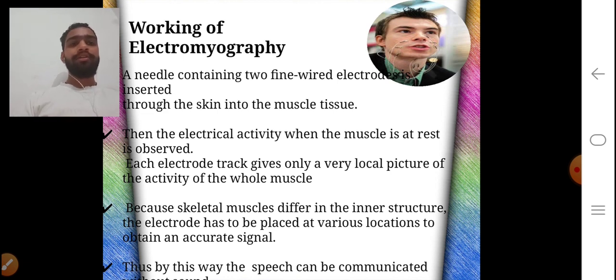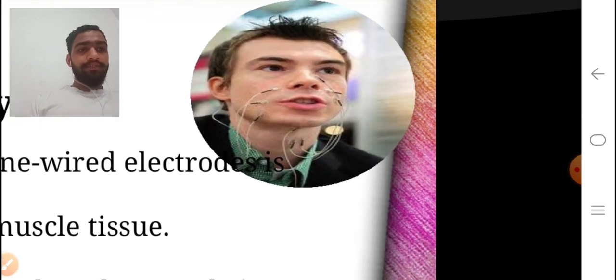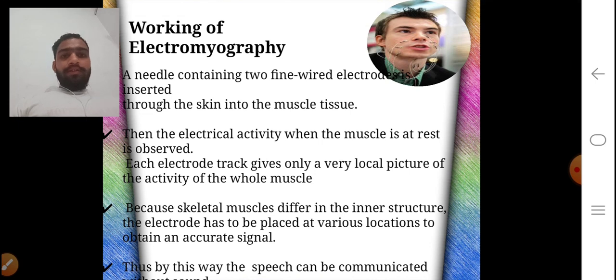Working of Electromyography: a needle containing two fine wire electrodes is inserted through the skin into the muscle tissue. As we see in this diagram. Then the electrical activity when the muscle is at rest is observed. Each electrode track gives only a very local picture of the activity of the whole muscle. Because skeletal muscles differ in the inner structure, the electrode has to be placed at various locations to obtain an accurate signal.